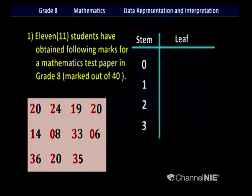Now I have represented it in an order. First I have mentioned 0 — that means I am going to place the numbers between 0 and 10 there, which are 1, 2, 3, 4, 5, 6, 7, 8 and 9. If I have one or more of those numbers I can represent them near that 0. When I represent 1 in stem, that means I have to mention all tens there. When I represent 2 in stem, that means only 20s. When I represent 3 under stem, that means only 30s.